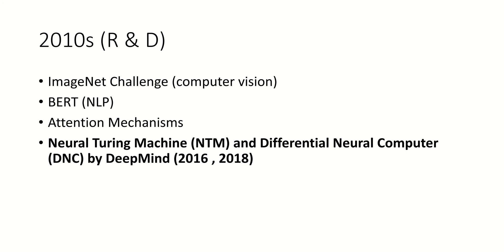Summarizing what went on in 2010: in computer vision, the ImageNet challenge was huge — people built better and better models to classify ImageNet. For natural language processing, we have BERT and GPT-3. And of course, the attention mechanisms, a very cool new architecture that's turned out to be extremely useful in a wide variety of tasks. The invention of the neural Turing machine and the differential neural computer were, I think, the most fundamentally significant R&D developments of the decade, done in 2016 and 2018 respectively.